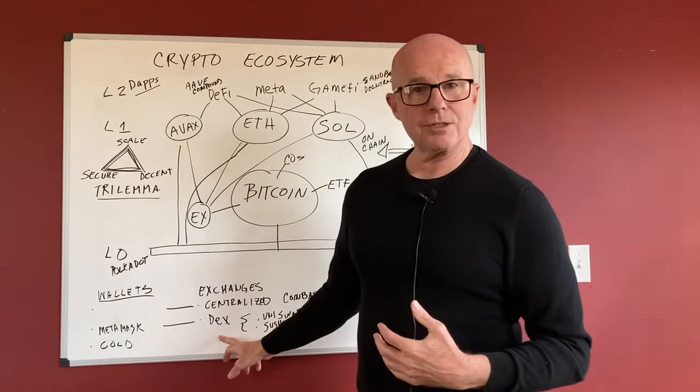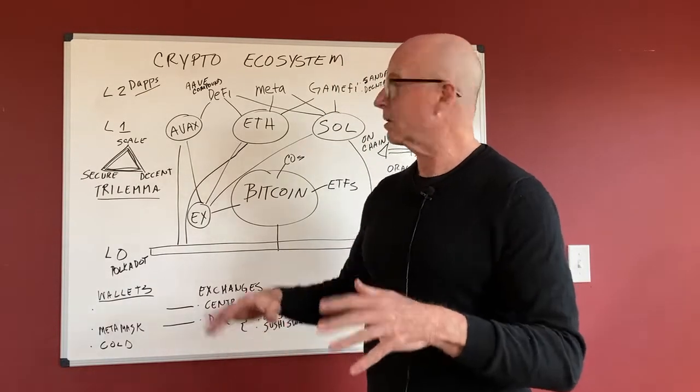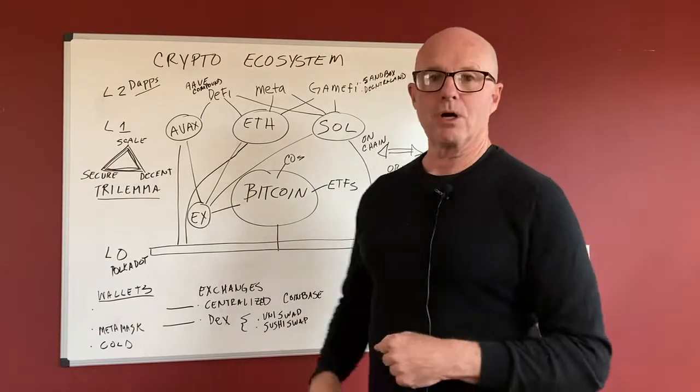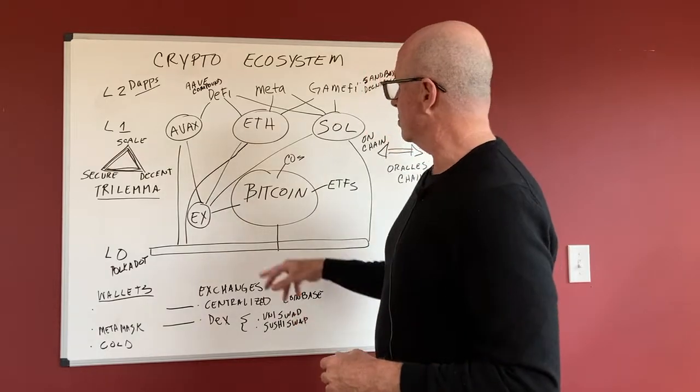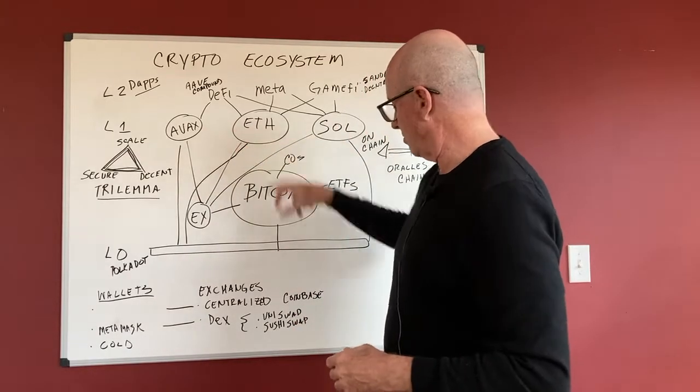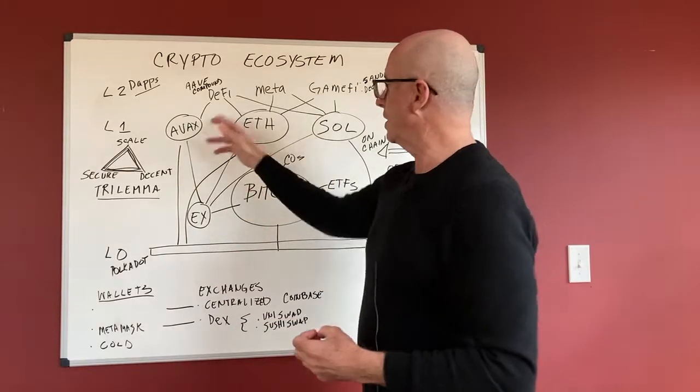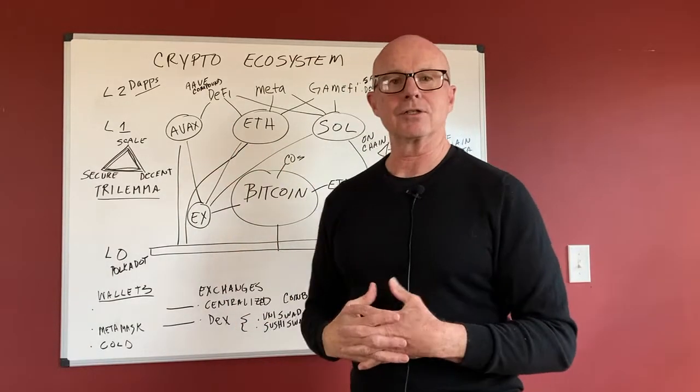And then there's also decentralized exchanges that work like all this decentralized stuff. Two of the big ones are Uniswap and SushiSwap. And they've actually just started to go on some of these other networks. They were built on Ethereum first, but now they're actually deploying on Solana and Avalanche as well.